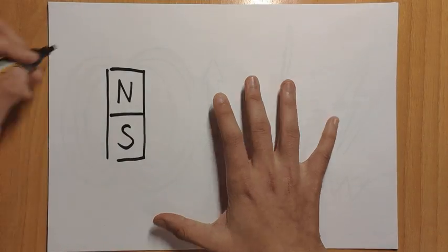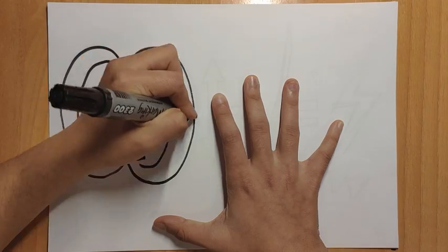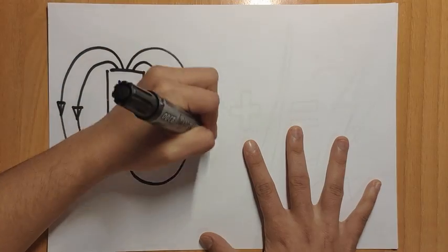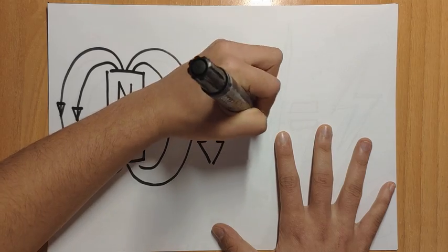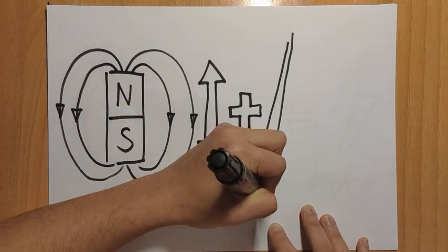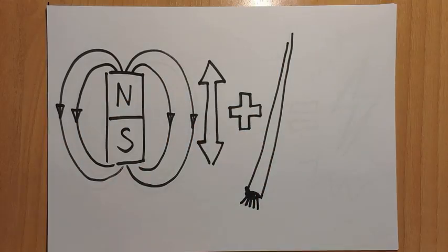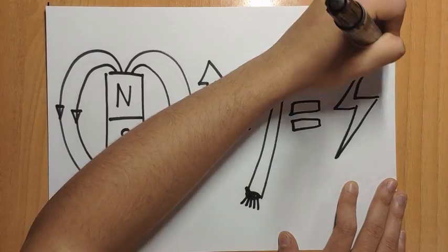Magnets generate a magnetic field, like this. When the windmill blades start to move, it triggers a mechanism that makes the magnet move up and down. When you add a copper wire to the equation, boom, electricity. All thanks to electromagnetic induction.